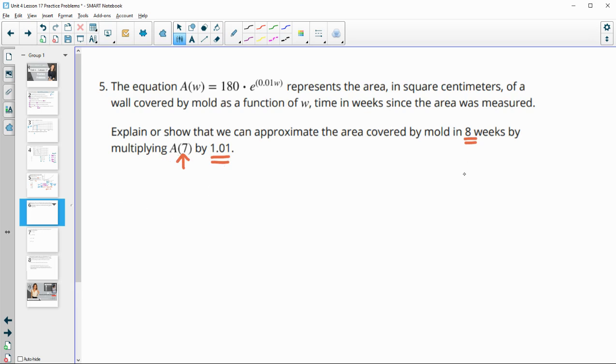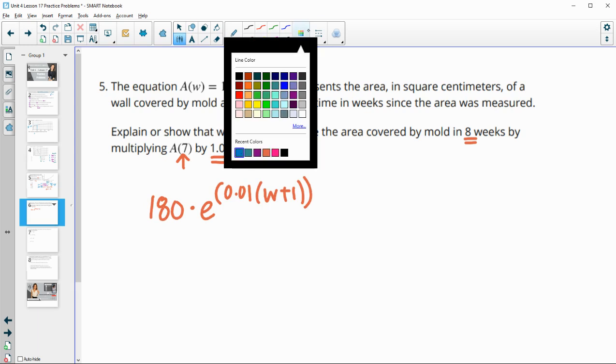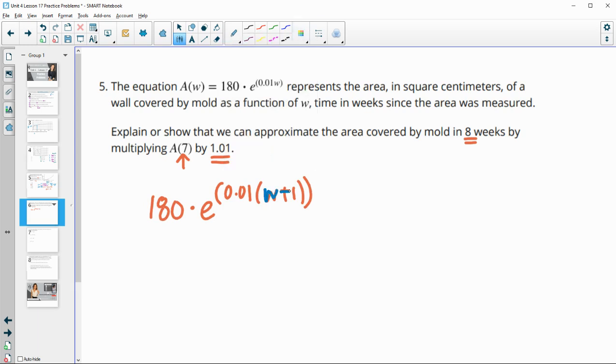So this is just one week higher, and so if we take a look at 180 times E to the 0.01 times W plus 1. So now we're just looking at our weeks plus 1. And just to show that the factor is 1.01 times bigger, so that if we know the previous week, we can just multiply by 1.01.